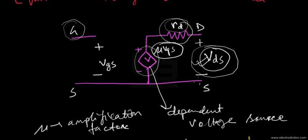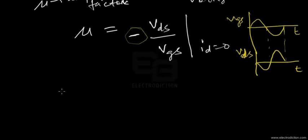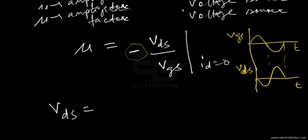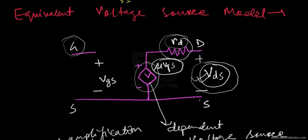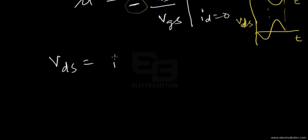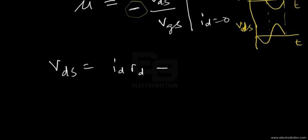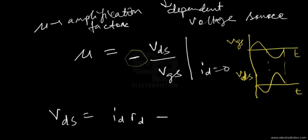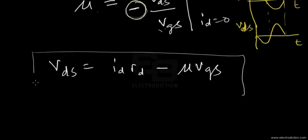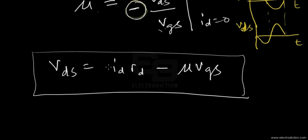Writing the equation for the voltage source model: V_DS equals the voltage across the drain resistance due to drain current, which is ID · R_D, minus mu · V_GS. Since the output and input are out of phase, cross-multiplying gives V_DS = minus mu · V_GS. That's the equation obtained from the equivalent voltage controlled model of the FET.